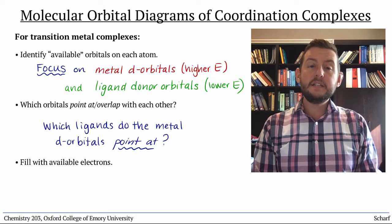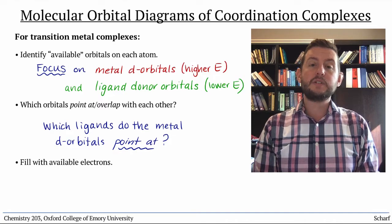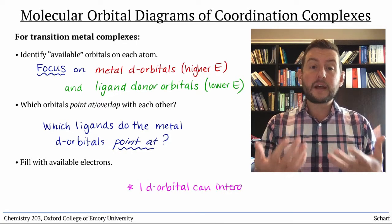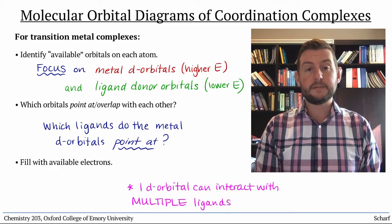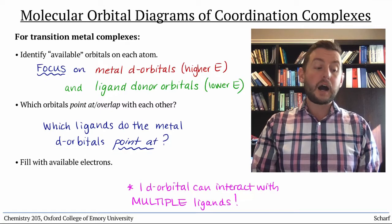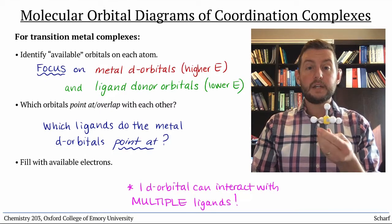The biggest difference between organic compounds and transition metals is that a single d orbital can interact with multiple ligand-based orbitals. Let's see how this works for a generic octahedral coordination complex.